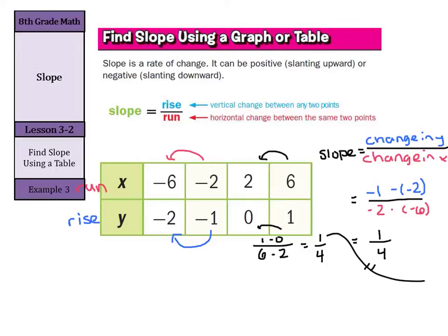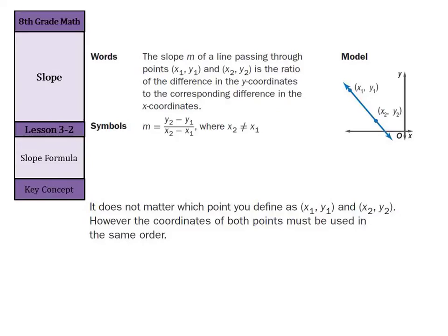So that is how we can find slope using both a graph and a table. There is, however, another way. And that way is using the slope formula. The slope is m. We're going to use the variable m to represent slope. So the slope m of a line passing through two points is the ratio of the difference in the y to the corresponding difference in the x.